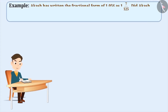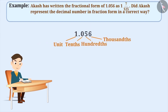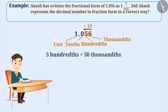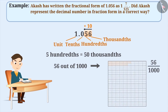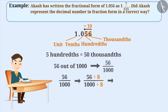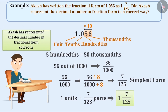Next example: Akash has written the fractional form of 1.056 as 1 and 7 by 125. Did he represent it correctly? There are 1 unit, 0 tenths, 5 hundredths and 6 thousandths. Since place value increases by 10 moving right to left, 5 hundredths equals 50 thousandths, giving a total of 56 thousandths — written as 56 by 1000. Dividing numerator and denominator by 8 gives the simplest form 7 by 125. So 1 unit and 7 by 125 together is written as 1 and 7 by 125. Akash represented the decimal correctly.